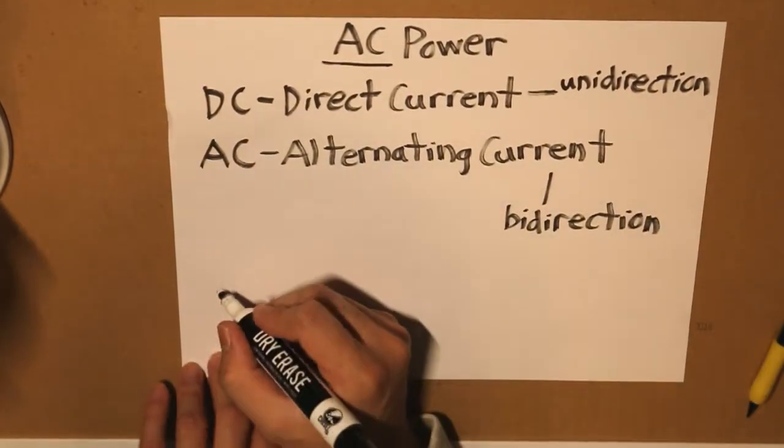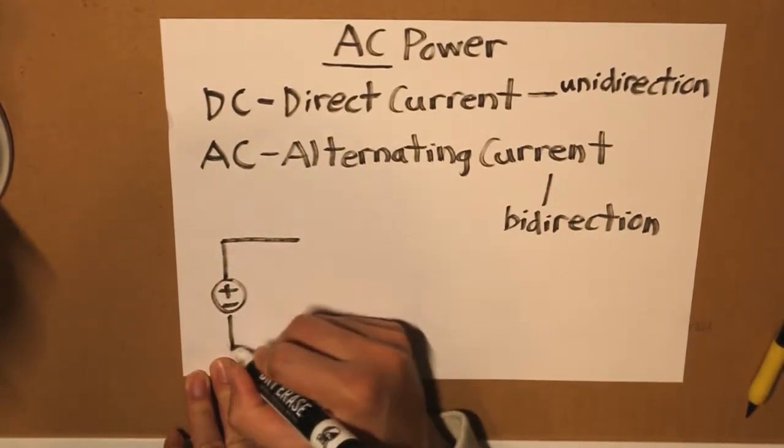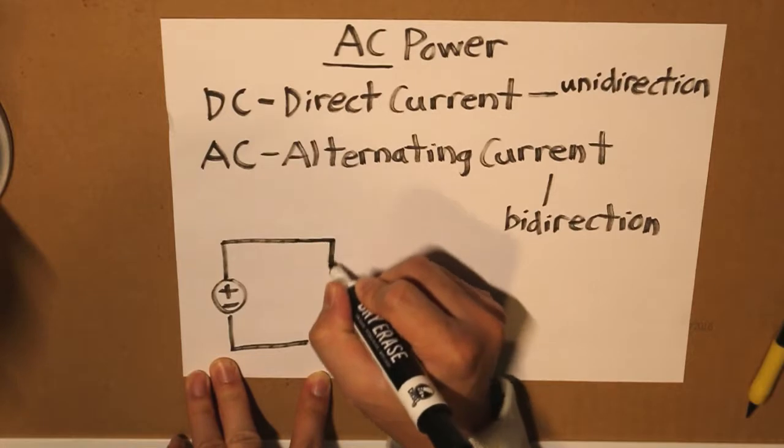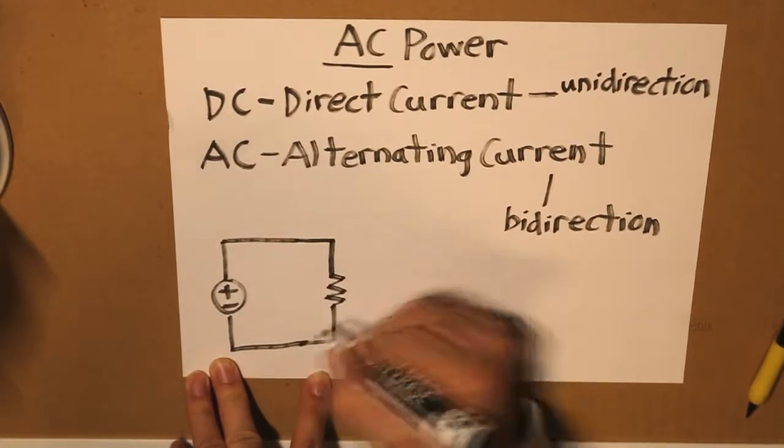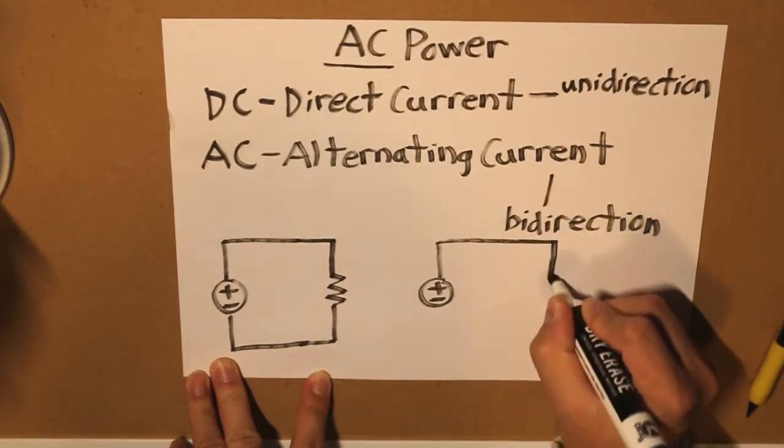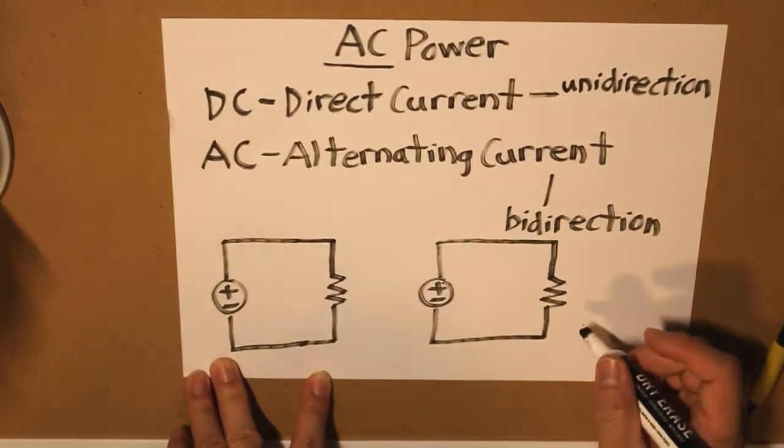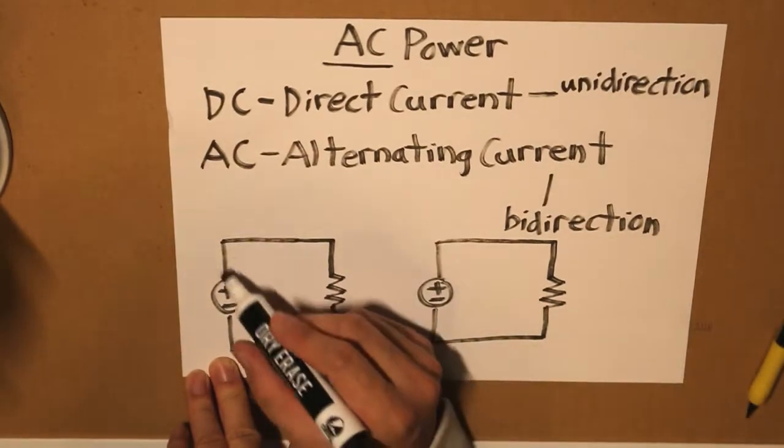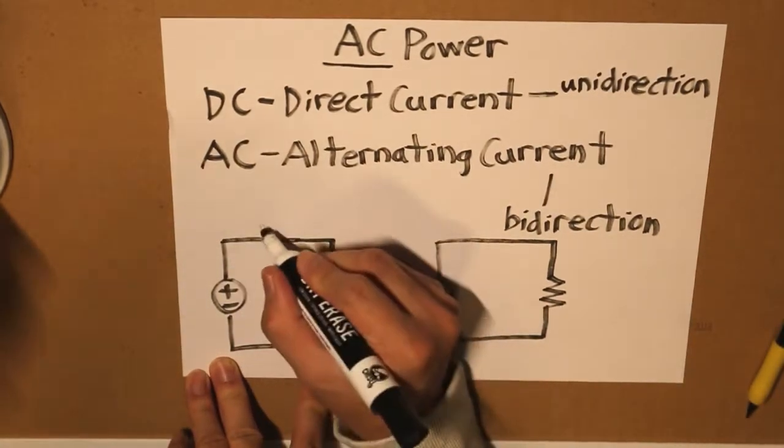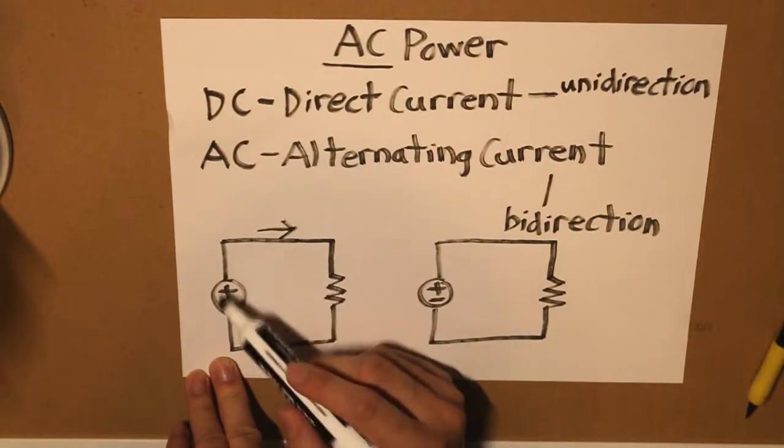So let's draw two circuits here. Basically we have a current traveling through this circuit, and this is what we call unidirectional DC.